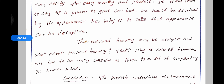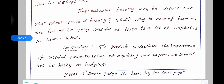It takes time to say if a person is good or bad — we should not be deceived by appearance. That is why it is said that appearance can be deceptive. Outward beauty may be all right, but inner beauty is very important. Thus, one has to be very careful, as there is a lot of complexity in the human mind. The proverb underlines the importance of careful examination — we should not be hasty in judging. The moral is: don't judge the book by its cover page.